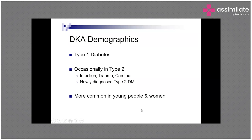If it is type 1 diabetic ketoacidosis, it will be seen more often in young population and more commonly in women. Whereas if DKA is presented due to type 2 diabetes precipitated by factors like infection, trauma, MI, or undiagnosed type 2 diabetes, it is seen more often in elderly population.